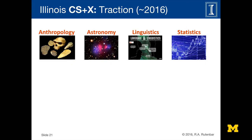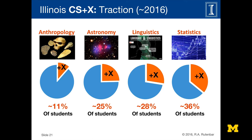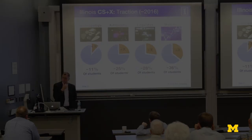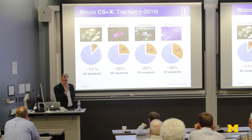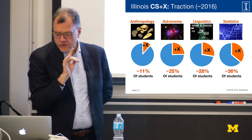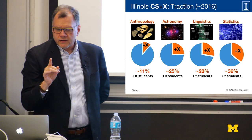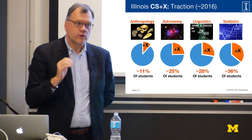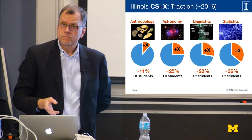Here's some interesting data — about a year old. Approximately 11% of the anthropology department, 25% of the astronomy department, 28% of the linguistics department, and 36% of the statistics department are now X students. The question of whether these are additive is a little squishy, but the data suggests that for anthropology and astronomy — departments that were not on growth trends — the growth was entirely additive. Statistics tells us that probably within five years they will be mostly X.